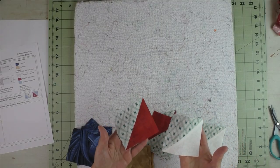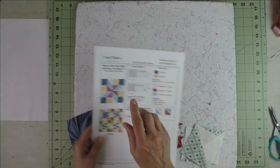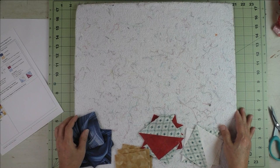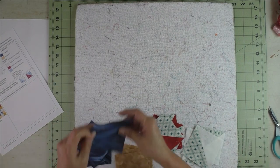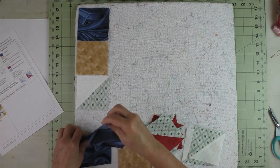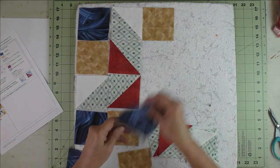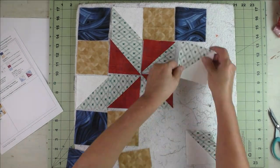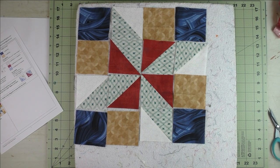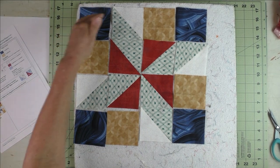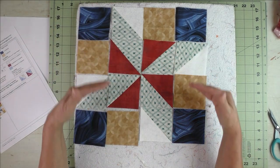Now we have all of our half-square triangles finished. We're going to look at the diagram and then lay the block out on the prop it board so we can take it to the machine to stitch it together. There it is laid out. We'll stitch the squares and half-square triangles into rows, four rows, then sew the rows together.